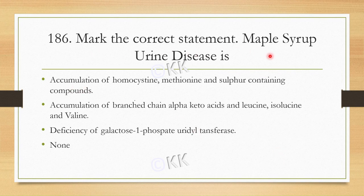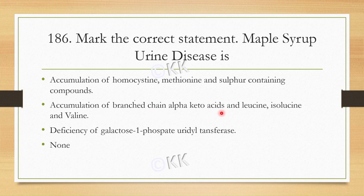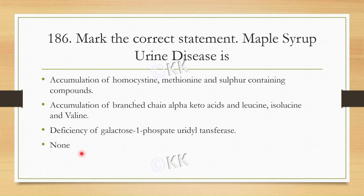Mark the correct statement about Maple Syrup Urine Disease (MSUD). Option A: Accumulation of homocysteine, methionine, and sulfur-containing compounds. Option B: Accumulation of branched-chain alpha-ketoacids, leucine, isoleucine, and valine. Option C: Deficiency of galactose-1-phosphate uridyl transferase. Option D: None. This was a disputed question. Initially Option A was given, but later ESIC reconsidered and accepted Option B. So take online PDFs with a pinch of salt, as initial answer keys can sometimes be wrong.